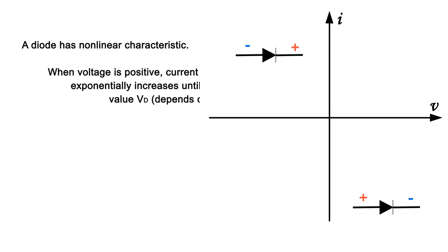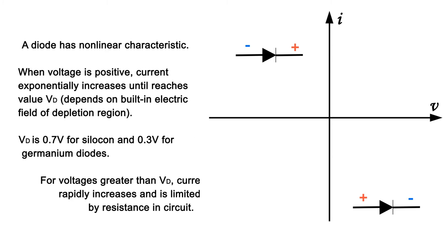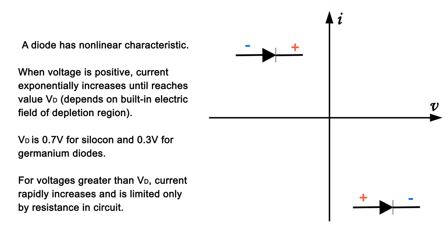A diode has nonlinear characteristic. When voltage is positive, current exponentially increases until it reaches value VD, which depends on built-in electric field of depletion region. VD is 0.7 volts for silicon and 0.3 volts for germanium diodes. For voltages greater than VD, current rapidly increases and is limited only by resistance in circuit.